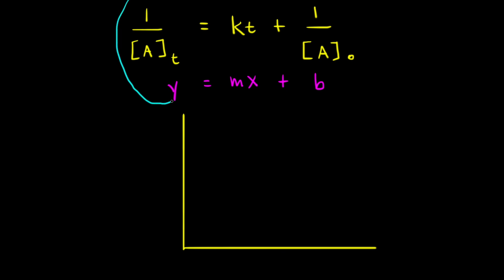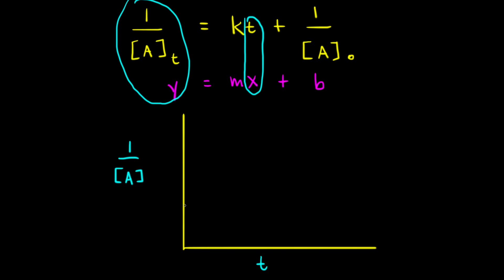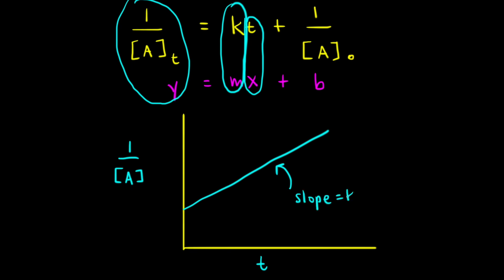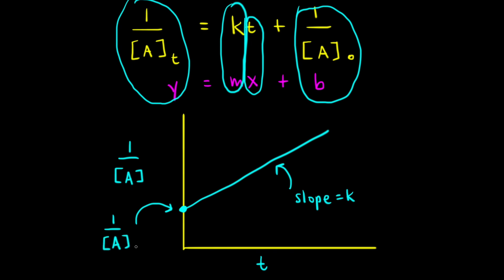So if we graph one over the concentration of A on the Y axis and time on the X axis, we will get a straight line and the slope of that line is equal to the rate constant K. The Y intercept is equal to one over the initial concentration of A, so the point where our line intersects the Y axis equals one over the initial concentration of A.